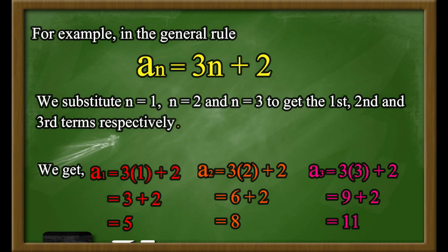Therefore, the sequence defined by the general rule is 5, 8, 11, and so on and so forth.